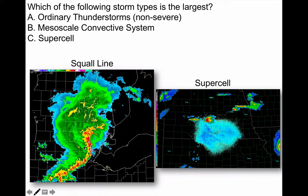Squall lines are teams of thunderstorms — groups of thunderstorms that work together as a convective system. Supercells are singular storms. They're rogue; they're by themselves. They rotate violently, but they're tiny. These two images are the same scale: here are some storms over Michigan — a big squall line — and that's one supercell in Nebraska.